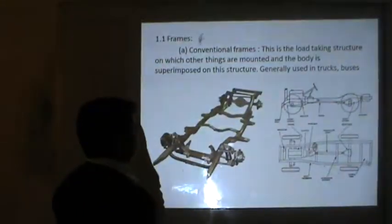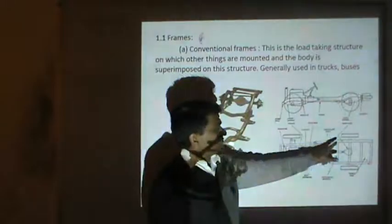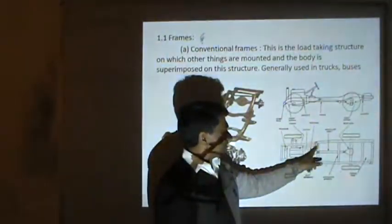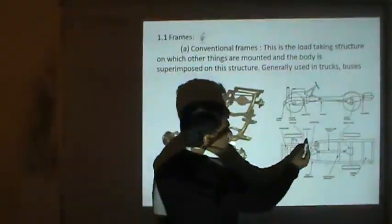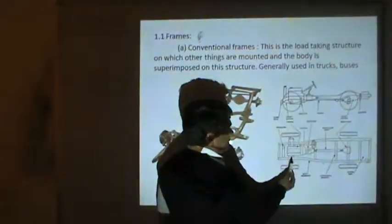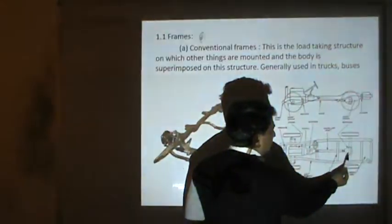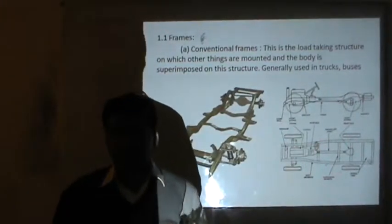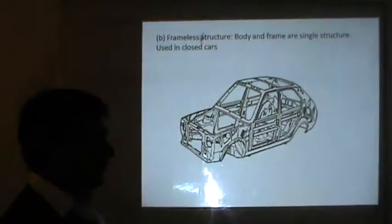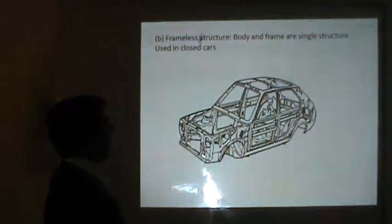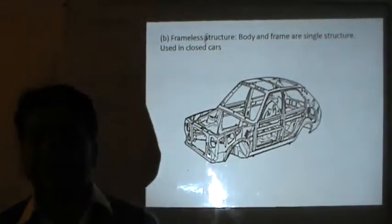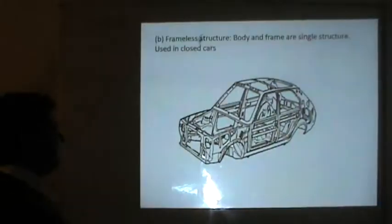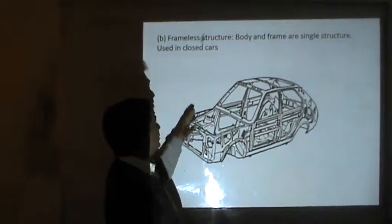In this diagram you can see the automobile has a frame structure, and on this frame other components are installed — such as the steering system, gearbox, engine, and suspension system. On the rear wheel there is a differential gearbox installed, and the remaining space is used to carry luggage. The second type of frame is called a frameless structure, in which the body and the frame are one part — they are welded together and become an integral part.